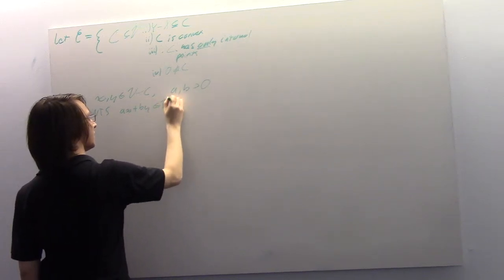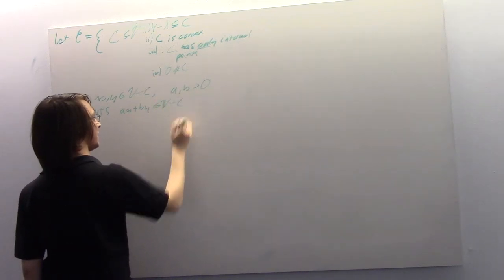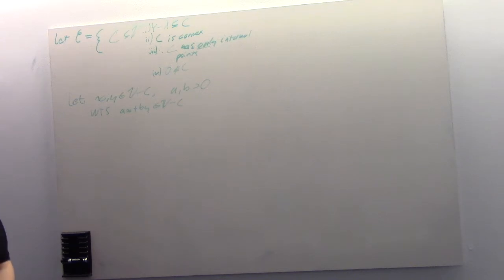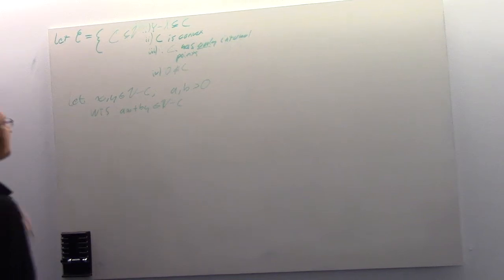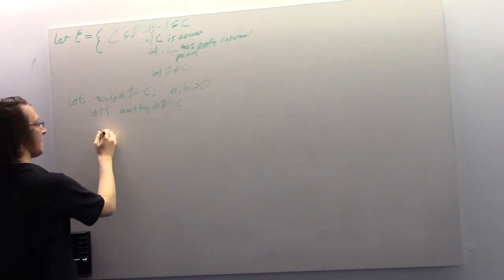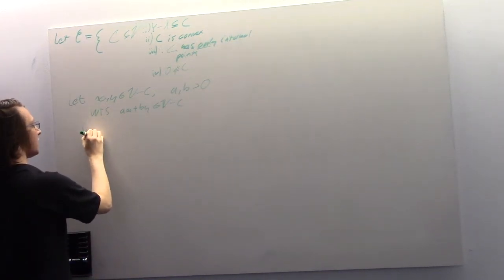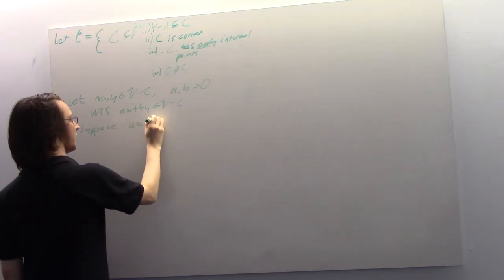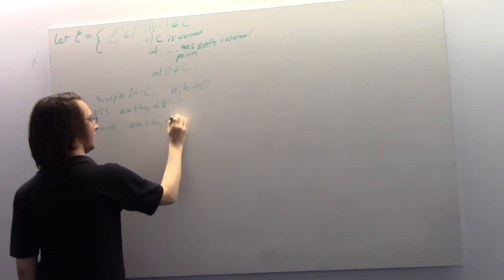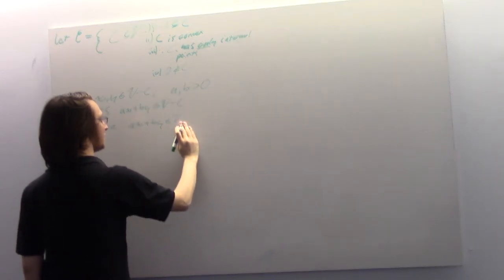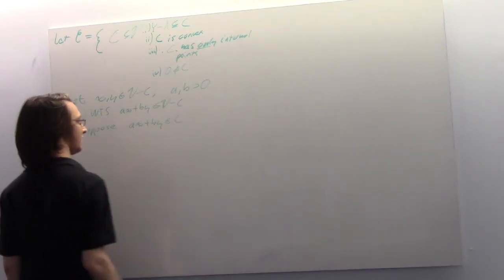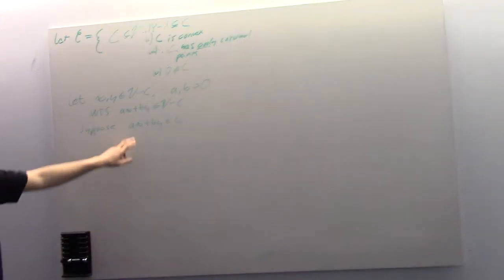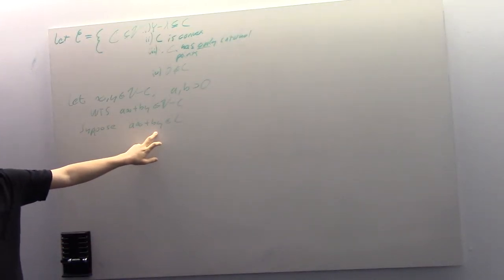We want to show that ax plus by is an element of V minus C. Suppose instead that ax plus by is an element of C. We know ax is an element of V minus C, and by is an element of C.